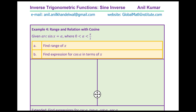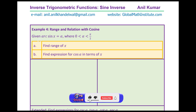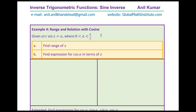Question 4: given arc sine x equals alpha, where alpha is between 0 and pi by 2 — meaning we are working in quadrant 1 — find (A) the range of x, and (B) the expression for cosine alpha in terms of x.